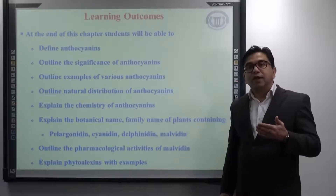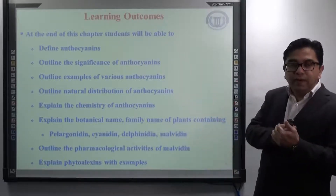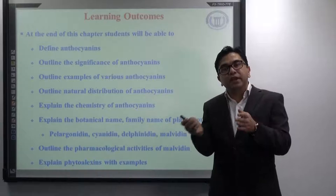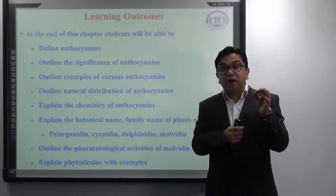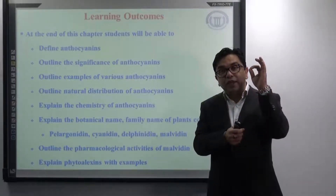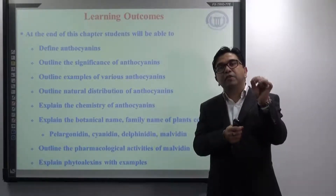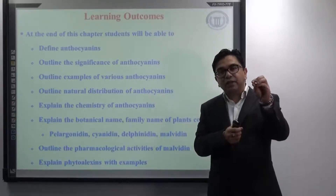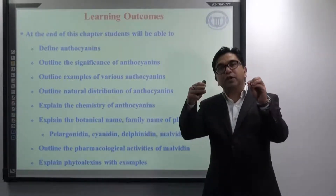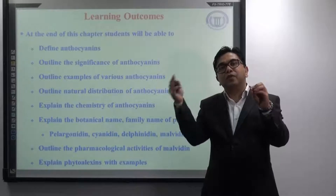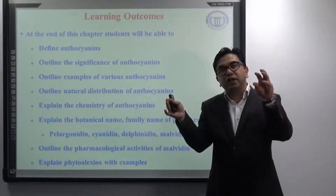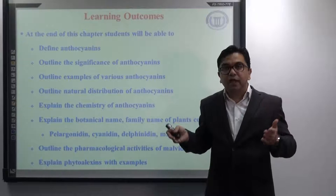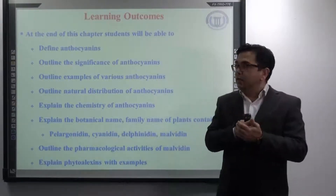Now, can I ask you before we proceed: what's the difference between anthocyanidin and anthocyanin? If you remember, anthocyanidin is the name of the aglycone. When an anthocyanidin is attached to a sugar molecule it becomes a glycoside, and the glycoside of anthocyanidin is known as anthocyanin. I hope you remember.